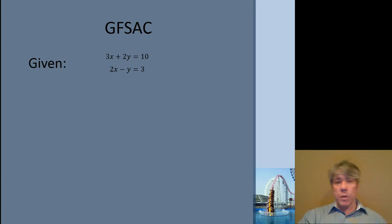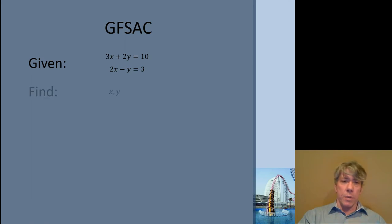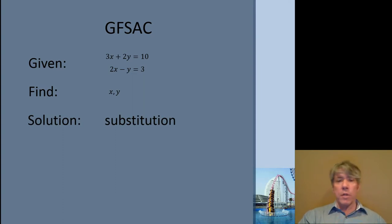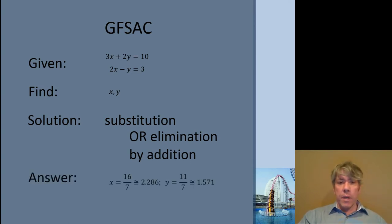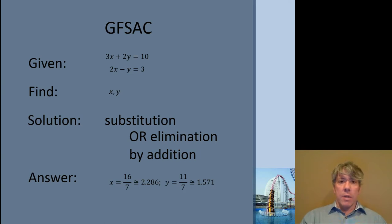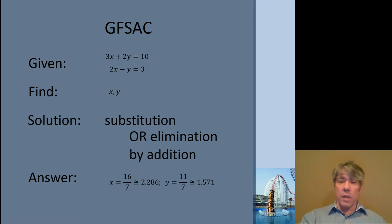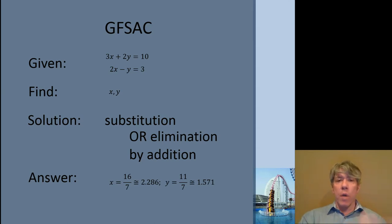Let's consider GFSAC. We're given two different equations — you could represent this in matrix form, take the inverse and solve it, but we won't need that level of solution. Using GFSAC: what are we given? What are we supposed to find? The unknowns are X and Y. The solution: we could use substitution or eliminate by addition. The solution would be to rearrange one equation to solve for one variable in terms of the other, plug that into the other equation, and solve for the single unknown. Alternatively, multiplying the lower equation by 2 and adding the two equations together eliminates Y directly. However you do it correctly, you'll get X and Y.